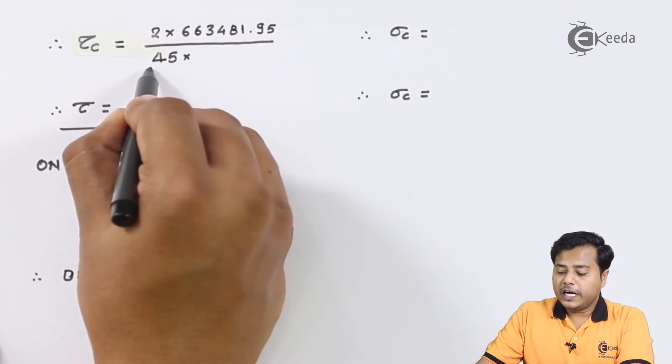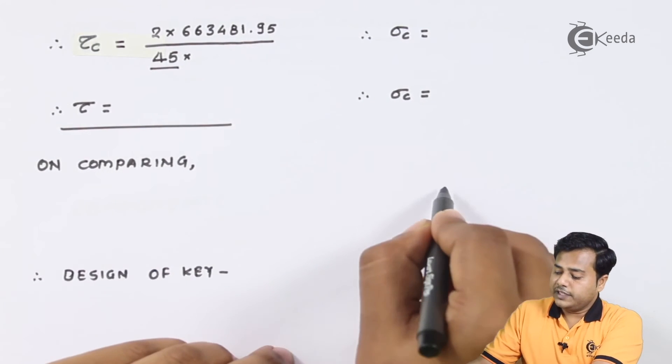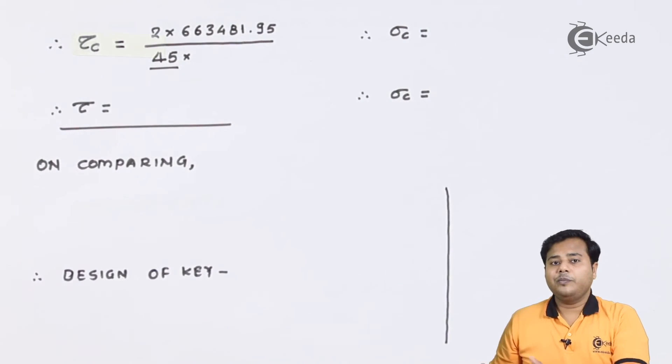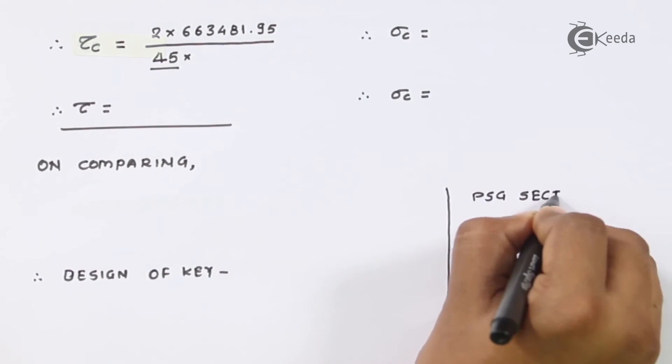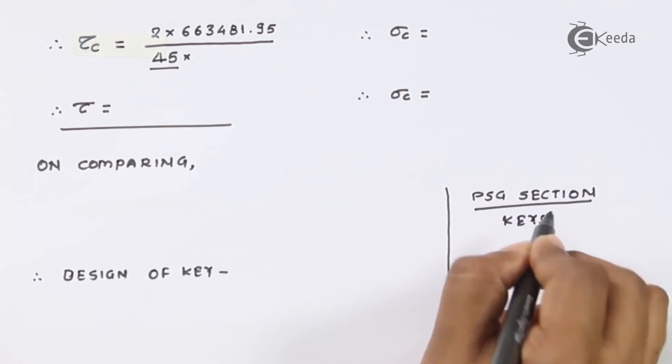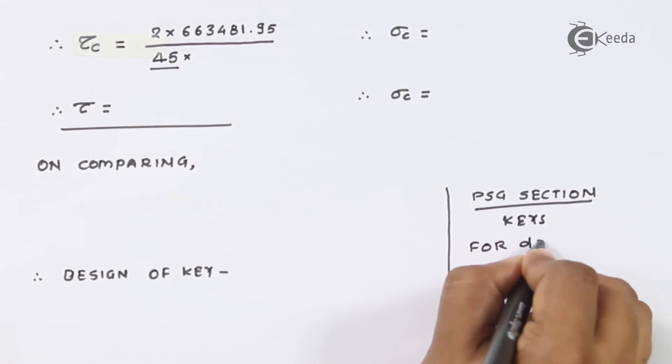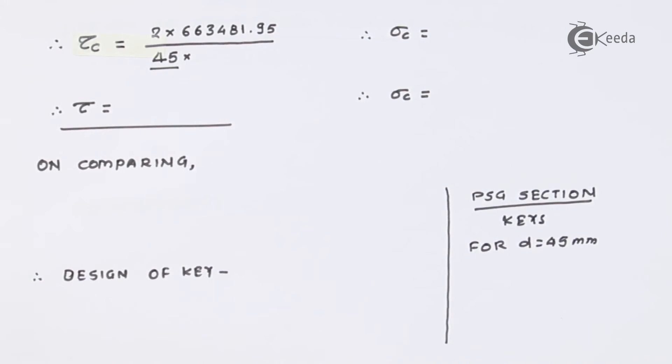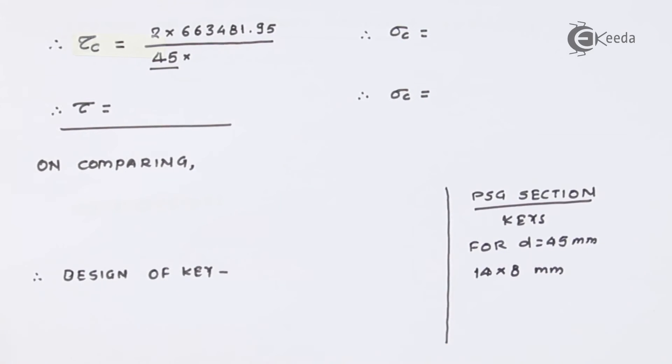Let us substitute the values. For the diameter 45 millimeter of the shaft there is a standard selection for the key. From PSG section of keys, for the shaft diameter 45 millimeter, a standard key available is 14 by 8, where 14 is its breadth and 8 is its height or depth.